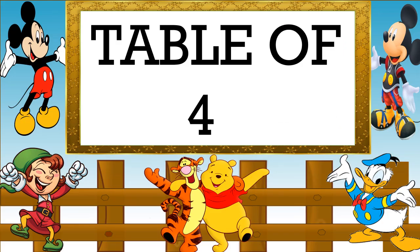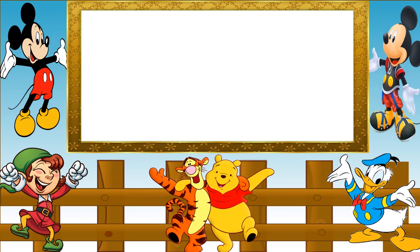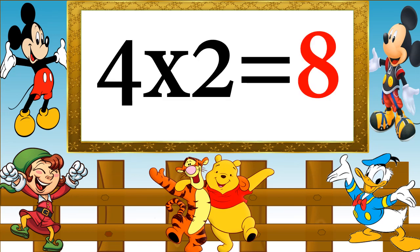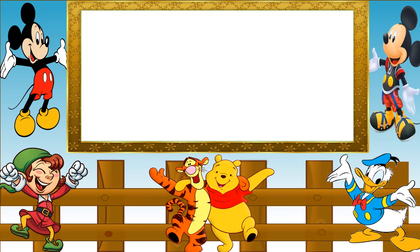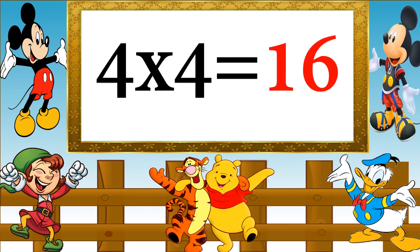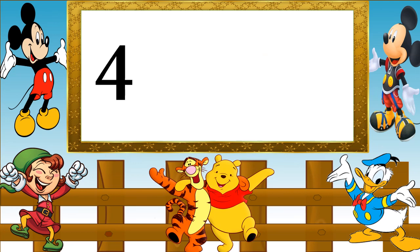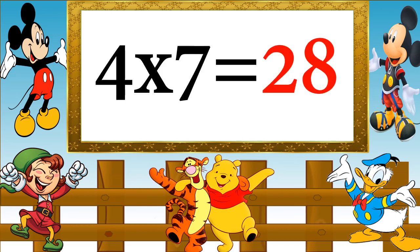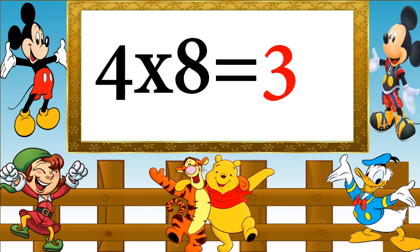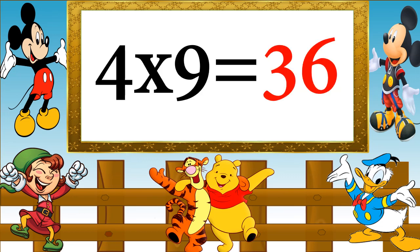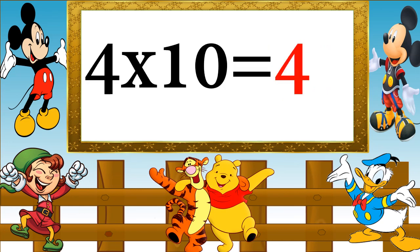Table of 4. 4 ones are 4, 4 twos are 8, 4 threes are 12, 4 fours are 16, 4 fives are 20, 4 sixes are 24, 4 sevens are 28, 4 eights are 32, 4 nines are 36, 4 tens are 40.